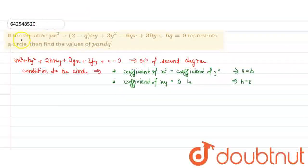So we have a question: If the equation px² + (2-q)xy + 3y² - 6qx + 30y + 6q = 0 represents a circle, then find the values of p and q.